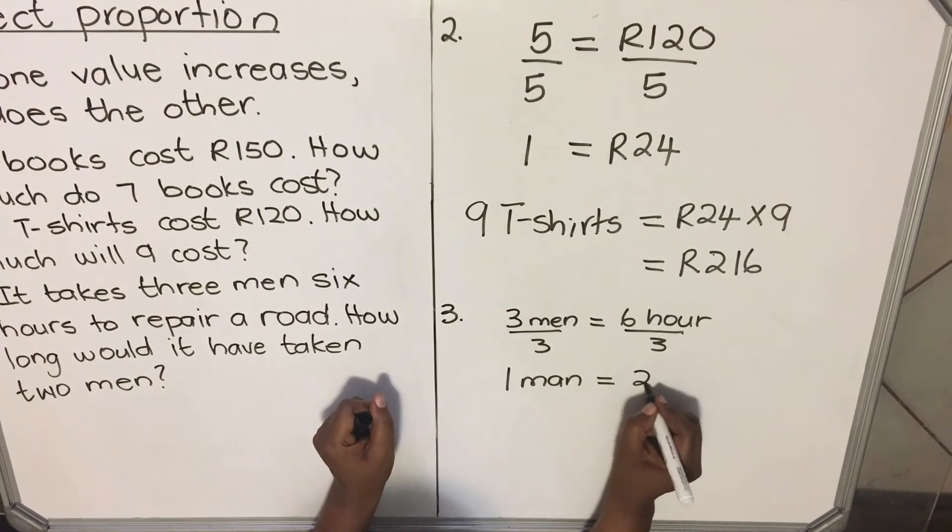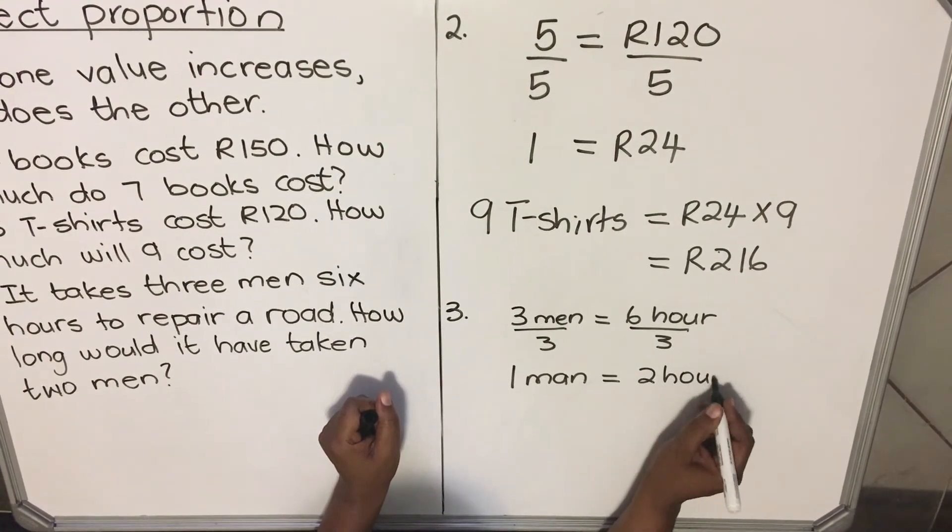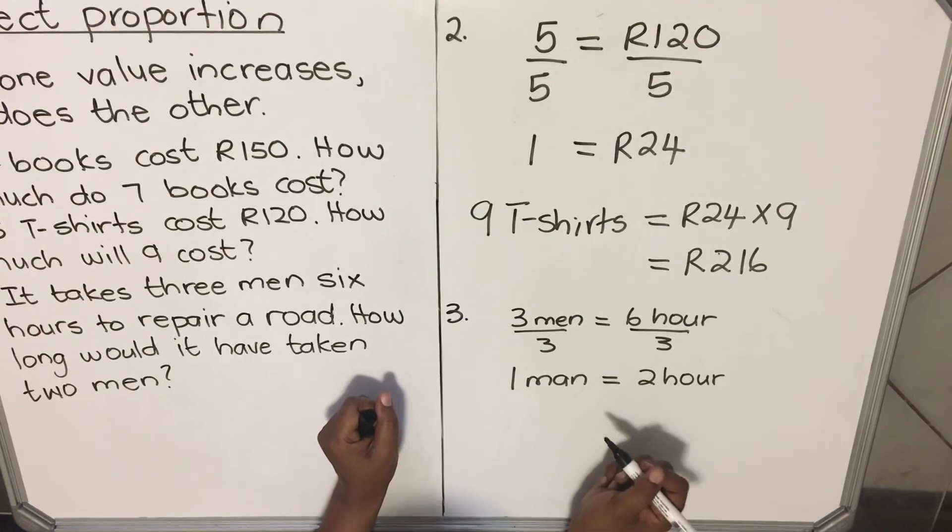One man, six divided by three is two hours. So for one man it will take two hours to repair the road.